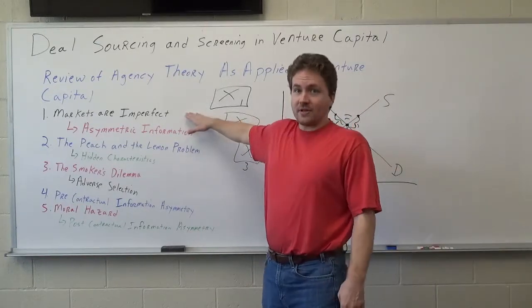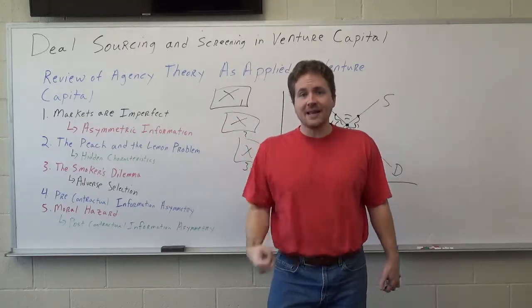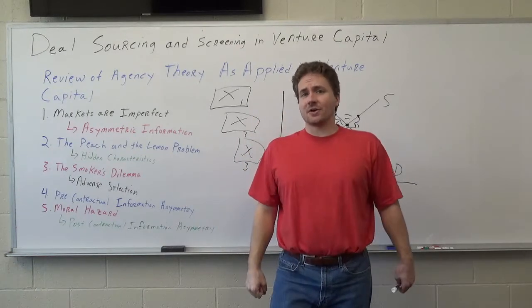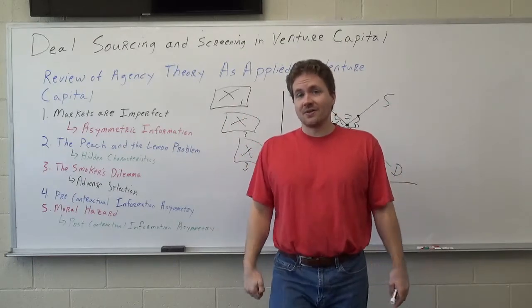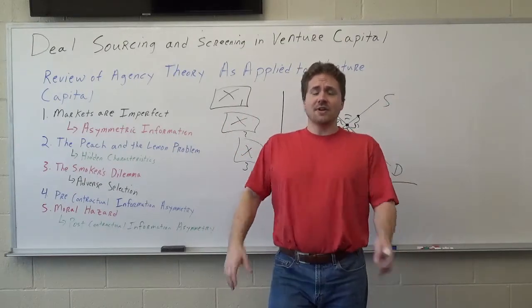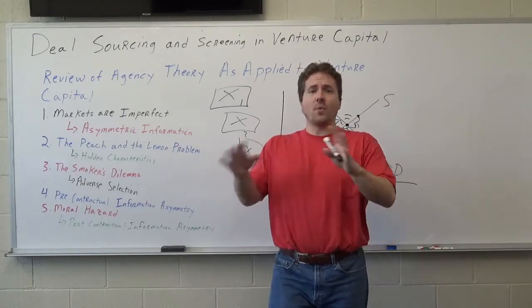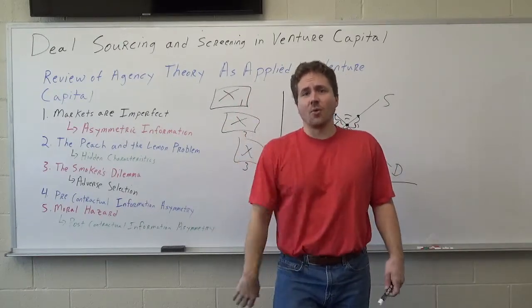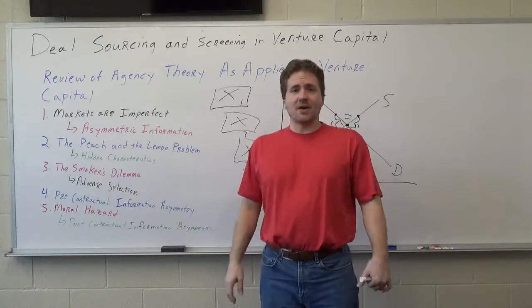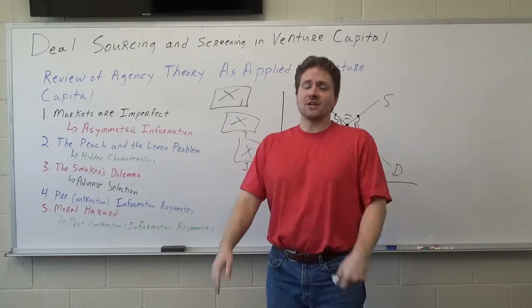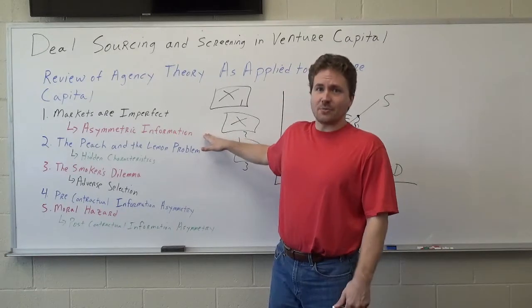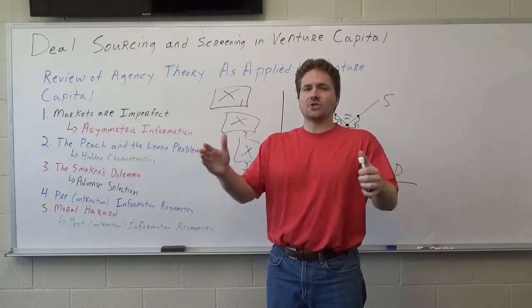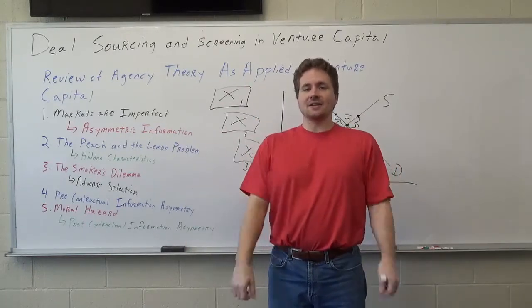Either way, markets are imperfect, including having asymmetric information — meaning the entrepreneur doesn't know everything the venture capitalist knows, and the venture capitalist doesn't know everything the entrepreneur knows. So they don't make perfect decisions. If they did, venture capitalists would invest in the right company 100% of the time — it wouldn't be the case where 19 companies fail and one is the home run. The entrepreneur knows more about his or her business than the VC, and the VC knows more about what his or her firm wants than does the entrepreneur.